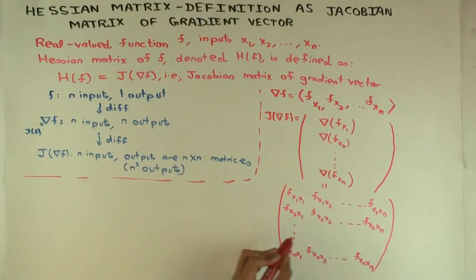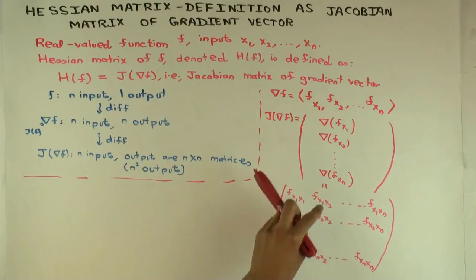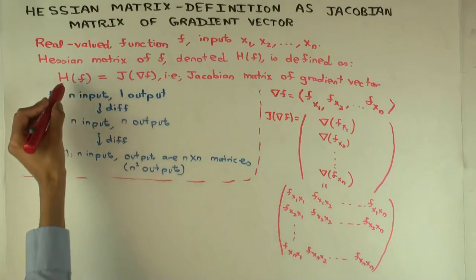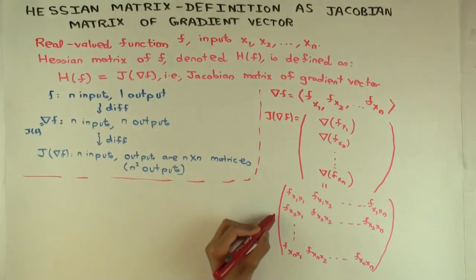Now, which of these are mixed partials, which are pure partials? Well, the diagonal entries will all be pure second order partials, and the off diagonal entries will be mixed second order partials. So the Hessian is therefore, so this is the Hessian. But this is the Hessian.